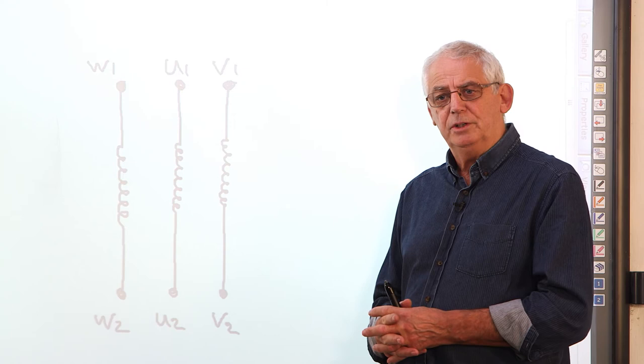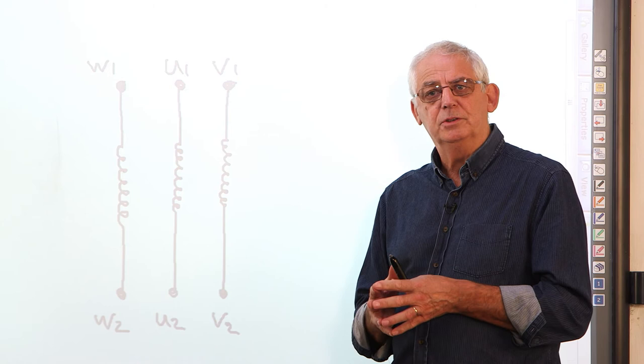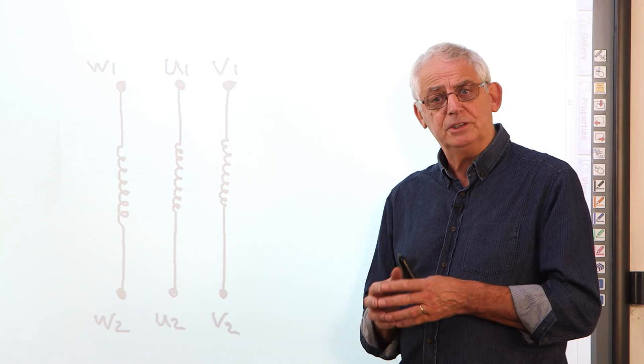The motor works in two different types of connection. Usually for a large motor, it will start in what we call a star connection and once it's reached a reasonable speed, it will then change to delta or mesh, as we call it sometimes.